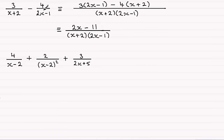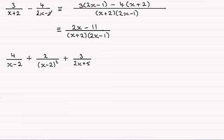Now if I was asked to express this fraction in partial fractions, the answer would be what we have here: 3 over (x + 2) minus 4 divided by (2x - 1). So partial fractions is about breaking this up into its original fractions. Notice that each of these factors in the denominator appears in each of the individual fractions, and these types of factors are called linear factors.